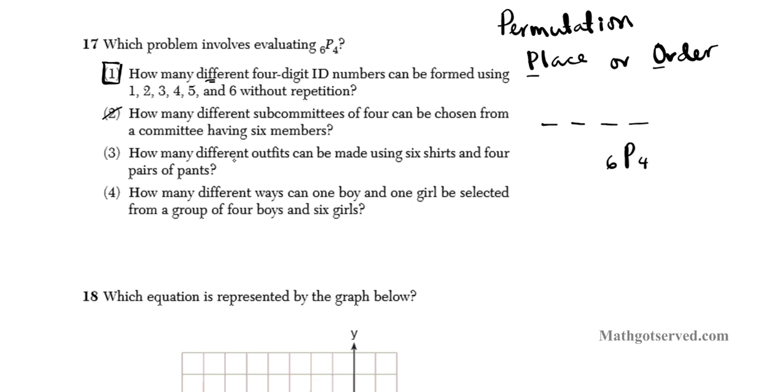Option 3 says how many different outfits can be made using 6 shirts and 4 pants? This one is totally not. This doesn't even involve selecting 4. This is a combination of selecting 2 items at a time, probably 1 shirt and 1 pants. And if you look at option 4, it says how many different ways can 1 boy and 1 girl be selected from a group of 4 boys and 6 girls? You are selecting 2 elements and you are not even placing them in a particular position. Since they are not being ordered in any way, it is not a permutation. So the answer is option number 1.